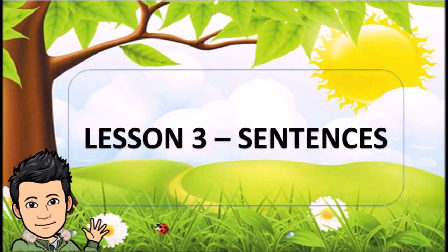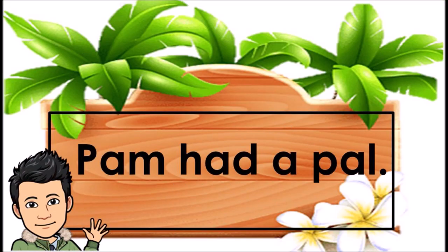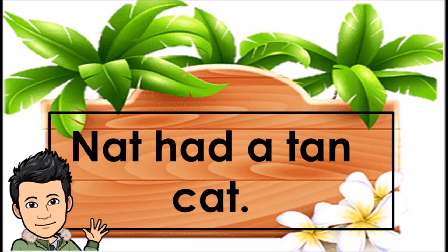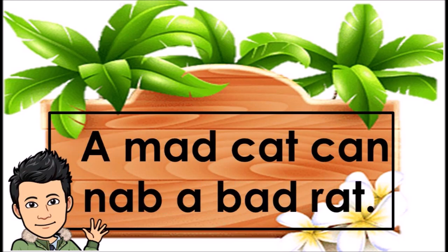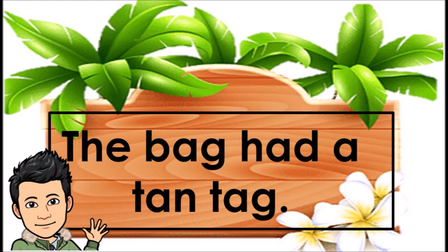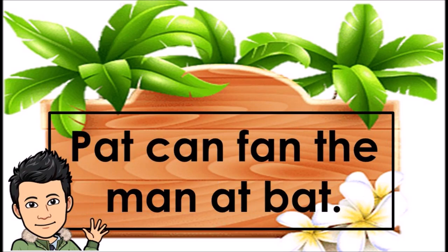Lesson 3. Sentences: Mac had a map. Pam had a pal. Pam can tag Sam. Nat had a tan cat. The tan cat ran at a fat rat. A mad cat can nab a bad rat. Nan had a tan bag. The bag had a tan tag.